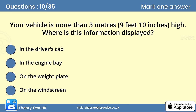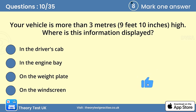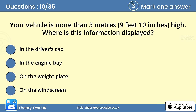Question 10. Your vehicle is more than 3 meters (9 feet 10 inches) high. Where is this information displayed? The answer is A: In the driver's cab. It's a legal requirement that information about a vehicle's height can be seen by the driver from their seat. It's important to know the height of your vehicle so that you can avoid any height restrictions on your route.